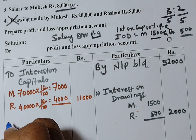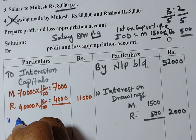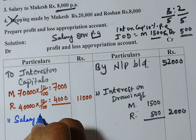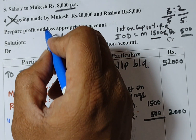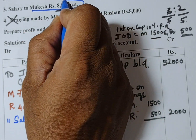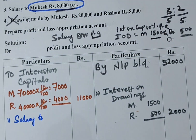After interest on capital, we record salary to a partner. In this problem, salary to Mukesh is given as rupees 8,000 per annum.